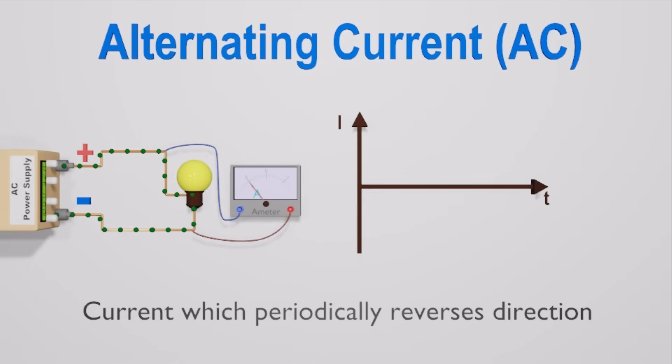We can draw a graph for the magnitude and direction of alternative current with the time. Like this. Since the current changes its direction periodically, the graph has both positive and negative cycles. The speed at which AC changes polarity and completes several cycles in one second is called frequency, and it is measured in Hertz.